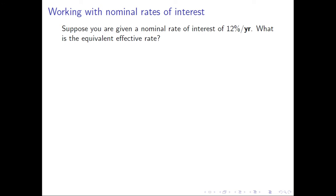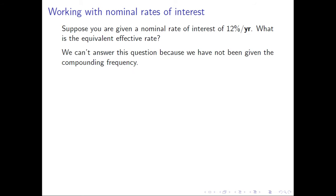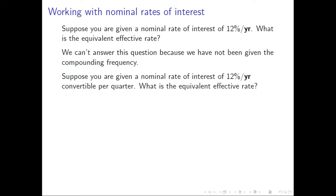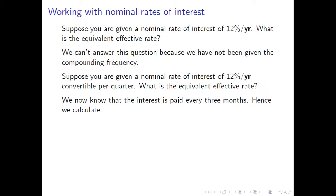Now suppose we're given a nominal interest rate. We've just seen how to convert an effective rate into a nominal rate. But suppose we're given a nominal rate — what is the equivalent effective rate? Well, as given, we can't answer the question, because we haven't been given the compounding frequency. We don't know the frequency with which the effective interest will be paid. So let's try again. Suppose we're given a nominal rate of interest of 12% per year convertible per quarter. What is the equivalent effective rate? Now we can answer this, because we know the interest is paid every three months — a quarter is three months.